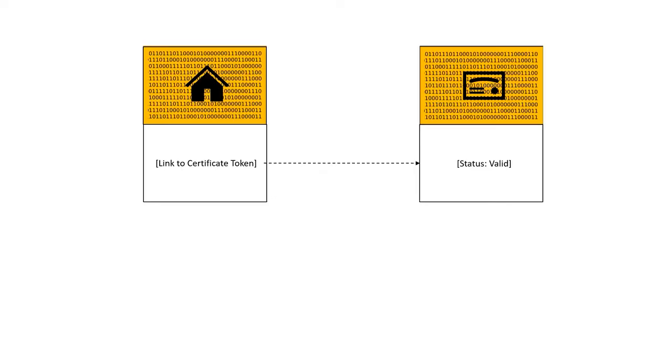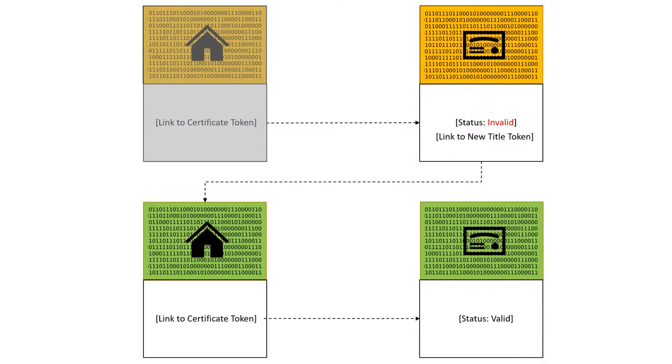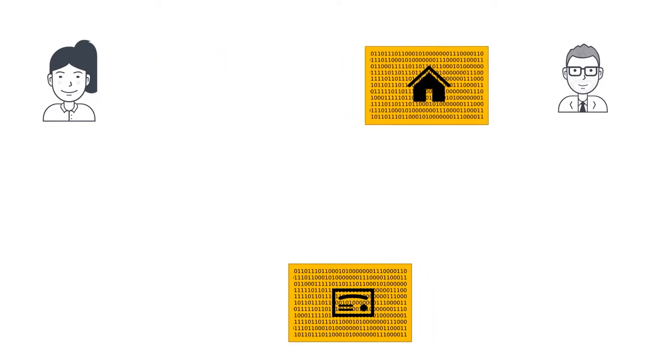The registrar cannot take anyone's title token and transfer it to a new legitimate owner. But an official can update the certificate record on their end. For example, they can change the status from valid to invalid, stolen, or disputed. If the court states that the title belongs to another proprietor, the official makes a new record with reference to a new token. If the owner transfers the title token to a new owner, there is no need to make any changes to the certificate record. The blockchain is designed so that after the transfer, the title token still refers to the same certificate record.